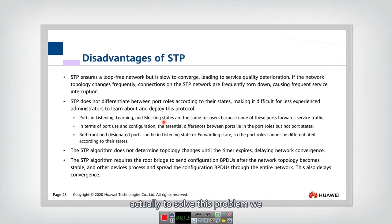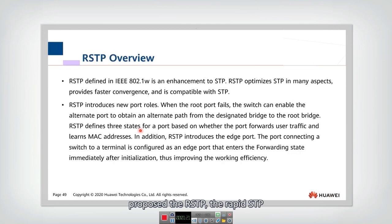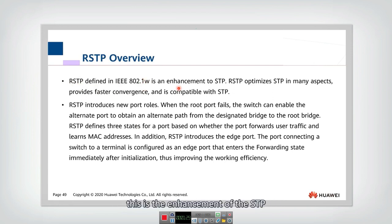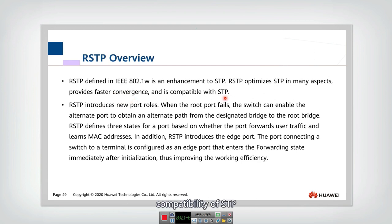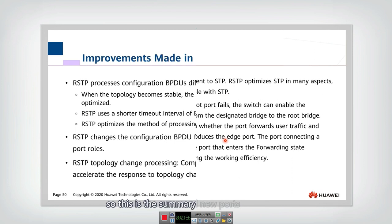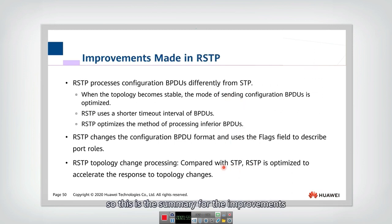To solve this problem, we proposed RSTP — the Rapid STP. This Rapid STP is defined in 802.1W and is an enhancement of STP. RSTP optimizes STP in many aspects, but the motivation is the same: they want to provide faster recovery and faster convergence than STP, while still maintaining compatibility with STP. RSTP introduced several new roles and several new port states.